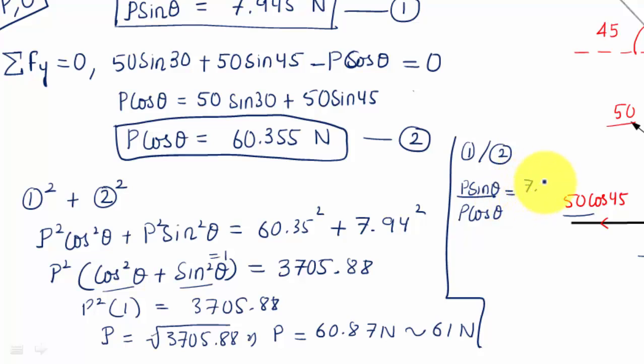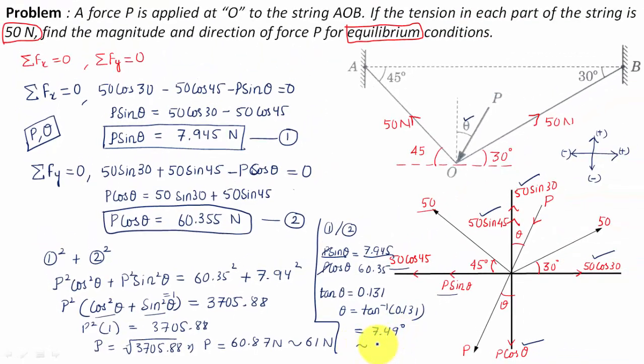P and P cancel out, sine theta by cos theta will be tan theta, and this should equal 0.131. Theta equals tan inverse of 0.131, and it should work out as 7.49 degrees, or you can approximate it as 7.5 degrees.